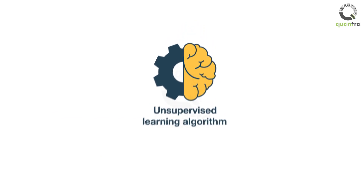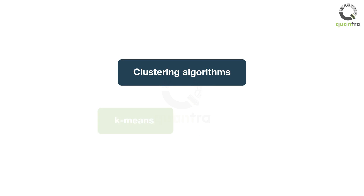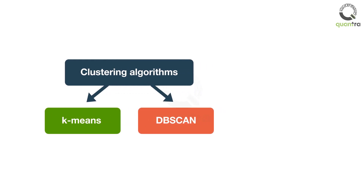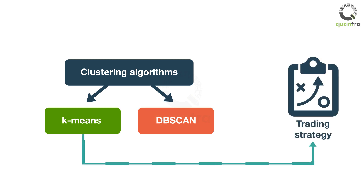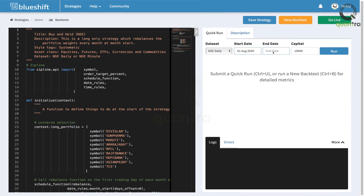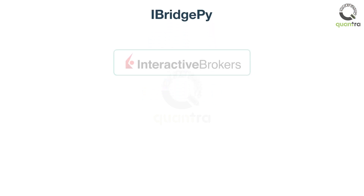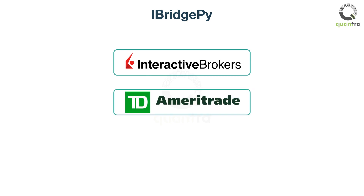This course starts with explaining what unsupervised learning is and how it is different from a supervised learning technique. You will learn several clustering algorithms such as k-means and DBSCAN and their implementation. A step-by-step guide to create a trading strategy using the k-means algorithm is covered in the course. You will also be able to test the strategy on live markets with the click of a button using BlueShift, the research and trading platform of QuantInsti. You can also use iBridgePy to connect your strategy with brokers such as Interactive Brokers, TD Ameritrade, or Robinhood.